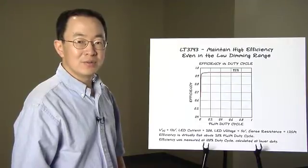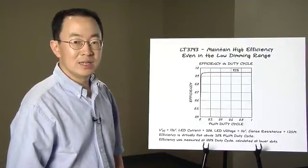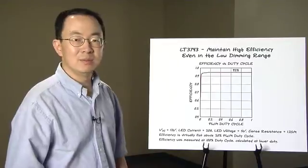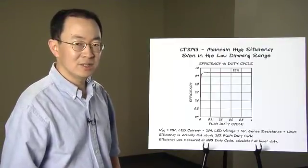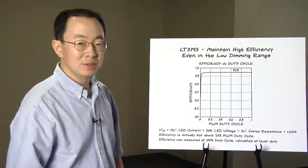Efficiency drops from 95% to 90% doesn't look too bad to untrained eyes. But if you think in terms of dissipation, you have to dissipate almost twice as much loss for the 90% efficient circuit. In high power output, high efficiency really makes a difference.